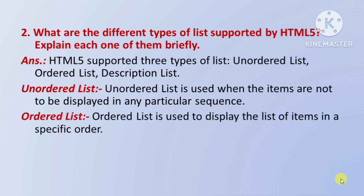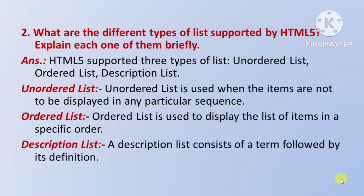Ordered list is used to display the list of items in a specific order — ordered list ka prayog kiya jaata hai list of items ko ek specific order mein display karne ke liye. Next, description list: a description list consists of a term followed by its definition — ek description list ek term aur uski definition se milkar bana hota hai.